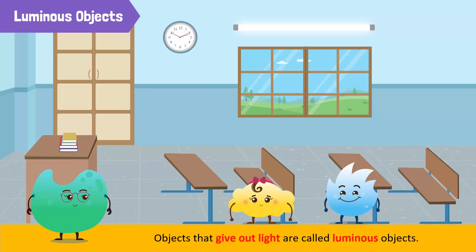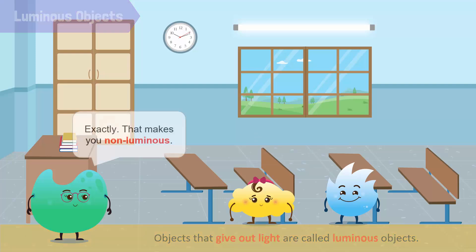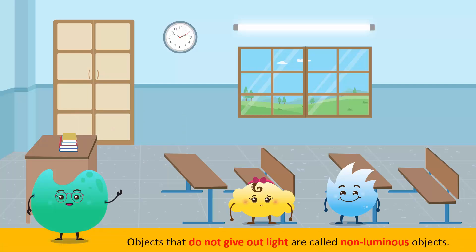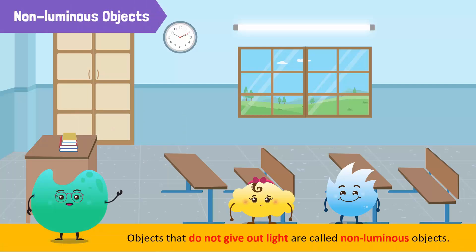Objects that give out light are called luminous objects. Are you luminous? I don't give out light. Exactly, that makes you non-luminous. Objects that do not give out light are called non-luminous objects.